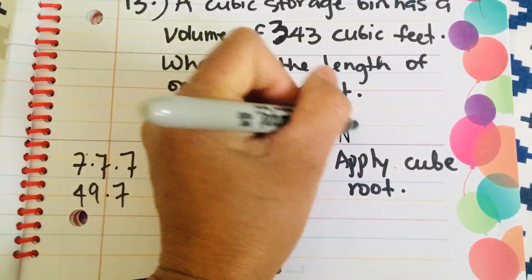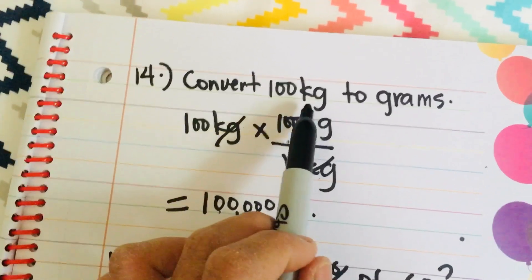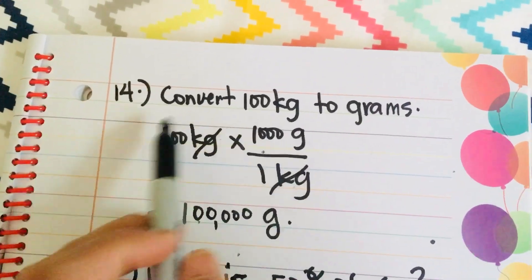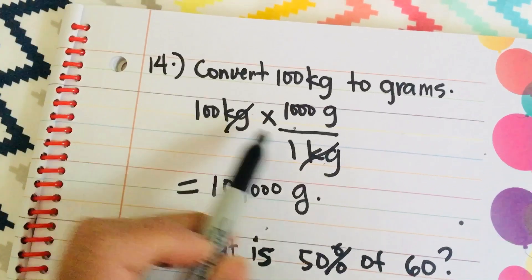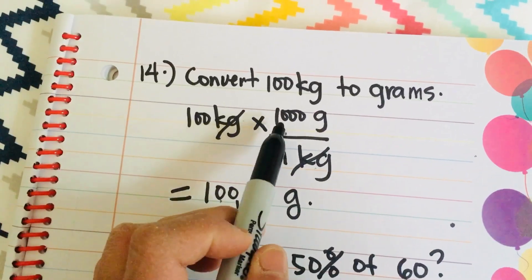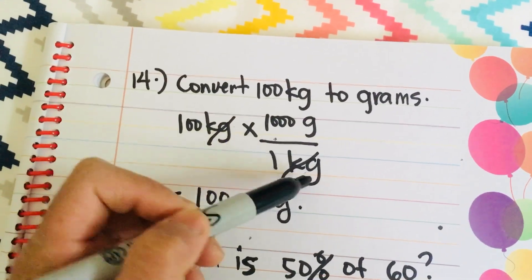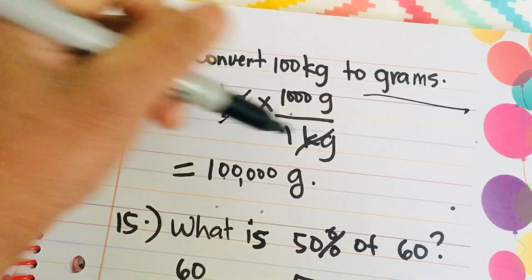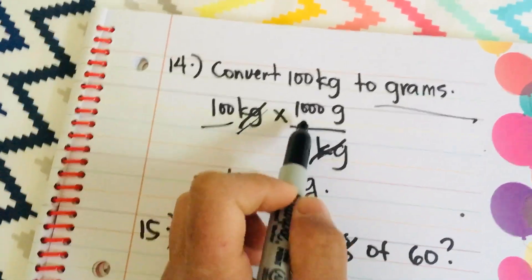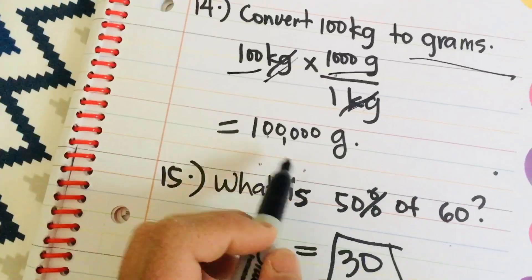Okay, number 14. Convert 100 kilograms to grams. This is a lot easier. But this is commonly used in medical field. So, 100 kilograms times 1,000 grams over 1 kilogram. As we know that 1,000 grams is equal to 1 kilogram. So, we want to find the grams, right? Now, we have to cancel this kilogram and kilogram. Then you just have to multiply this one. Give me one second, you guys! 100 times 1,000 is 100,000 grams. That's the answer.